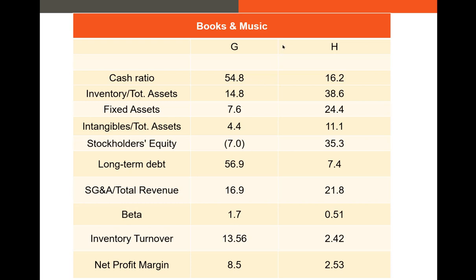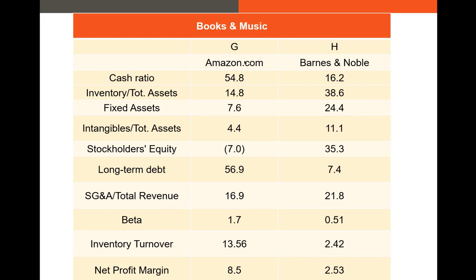So which firm is which? Firm G is actually Amazon and firm H is Barnes & Noble. How can we determine this? Start with inventory — Barnes & Noble has fixed assets, stores, and has to stock those shelves with a lot of inventory, which is why its inventory ratio is so much higher than Amazon's. Same thing with fixed assets — it has a lot of retail presence to maintain. It may have more intangibles due to patents or trademarks. Also, as noted, Amazon has made many more acquisitions, it's an online store so it's much riskier, and it has higher inventory turnover because an online retailer doesn't carry a whole lot of inventory.